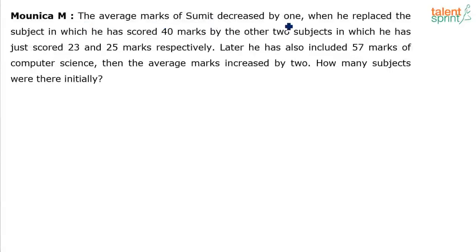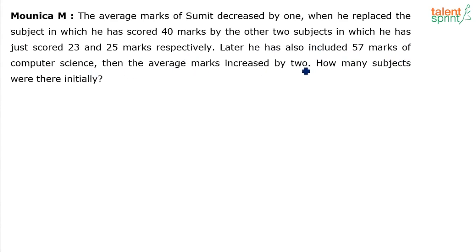The average marks of Sumit decreased by 1 when he replaced the subject in which he scored 40 marks by two other subjects in which he scored 23 and 25 marks respectively. Later, he also included 57 marks of computer science and the average marks increased by 2. How many subjects were there initially?